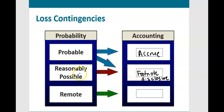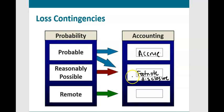If the probability of a payout is reasonably possible, we provide only footnote disclosure. If we can come up with a reasonable estimate of the range we may have to pay out, we give that information to the investor. And if the likelihood is so remote, we do nothing — we completely ignore it.